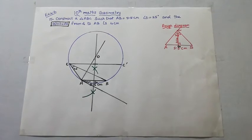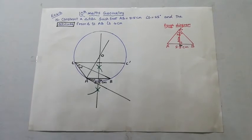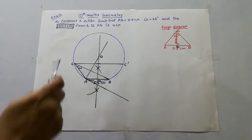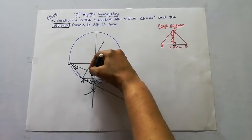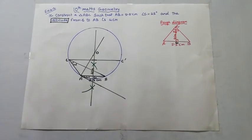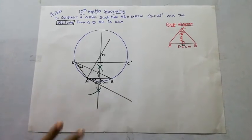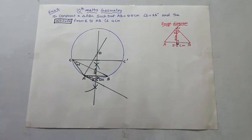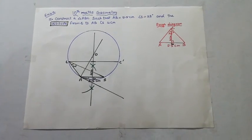So now we have constructed triangle ABC where angle C equals 25 degrees and the altitude from C to AB is 4 centimeter. The triangle ABC is complete. Steps of construction are done. If you want to practice more problems, subscribe to this channel and click the bell button for more videos.